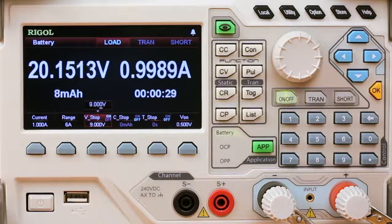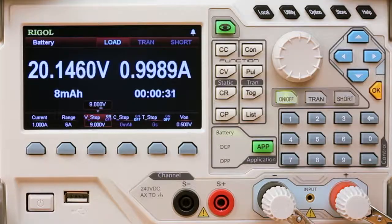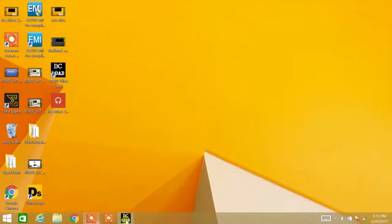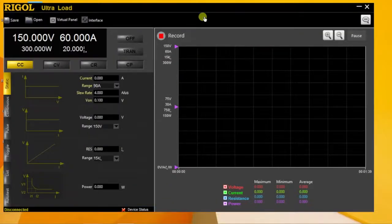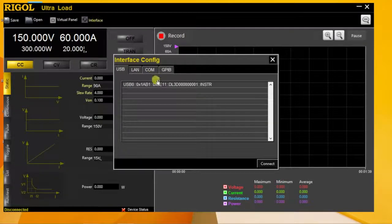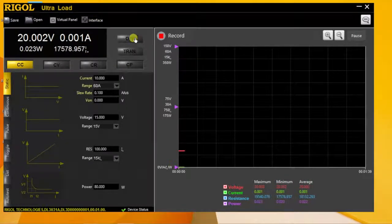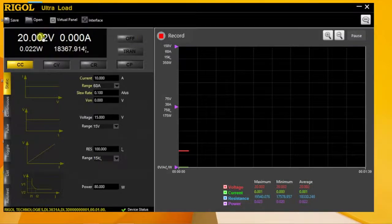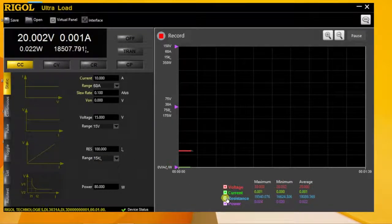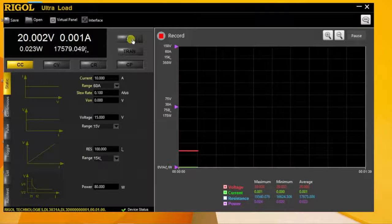Now let's look at another way to record that data. Let's start by opening the UltraLoad free software. From here we can connect to the instrument over USB, LAN, GPIB or RS-232. We see the 20 volts we're starting with. Since we're already set on the battery test, we can go ahead and hit the on button.